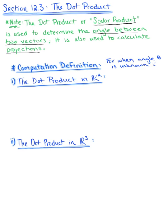So before we explore finding the angle and calculating projections, we need to establish a computation definition. Often times, the angle between two vectors is not going to be known, so we won't be able to use a geometric interpretation. In these cases, we use the following computation definition.